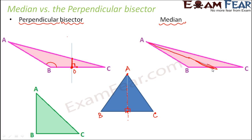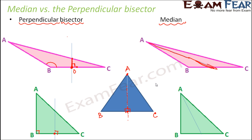Take another example — a right-angled triangle with a 90-degree angle. If we draw the perpendicular bisector on BC, it is a line perpendicular to BC drawn at the midpoint of BC. The median for the same triangle is the line joining the vertex to the midpoint — a completely separate line. So it is only in some special cases that the perpendicular bisector and the median coincide; otherwise these are two completely different concepts.